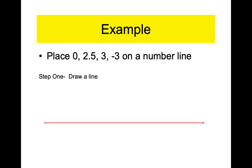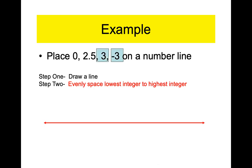Step one: draw a number line with arrows. Step two: figure out the largest and smallest, then evenly space your tick marks. You get to determine whether to go by ones, twos, fives, or tens. Make sure your tick marks are evenly spaced — there's my smallest, there's my largest, there are my tick marks. It just so happens on this number line that zero is in the middle, and I did go by ones. I could have gone by twos and it would be a perfectly fine number line.